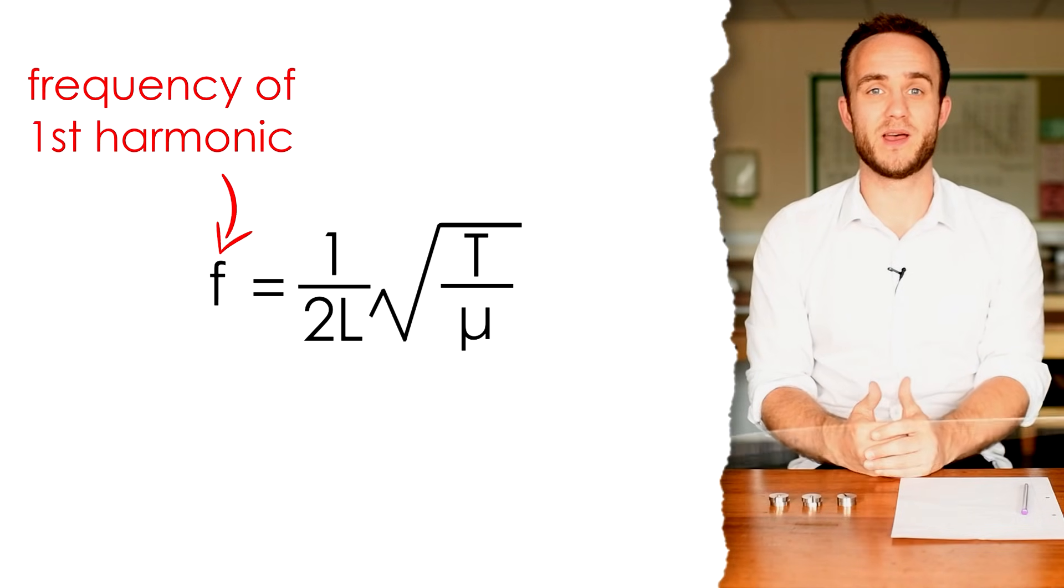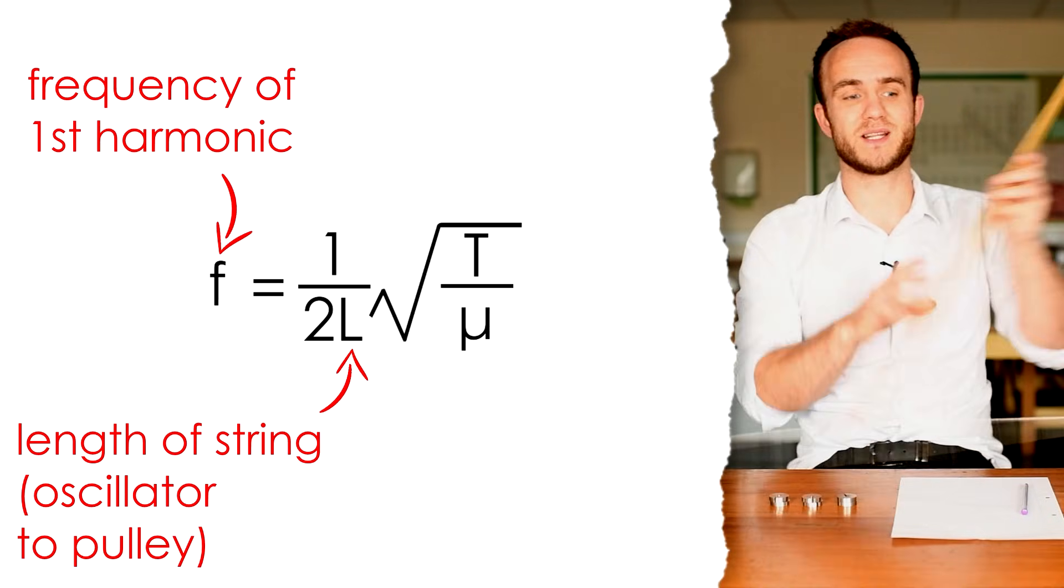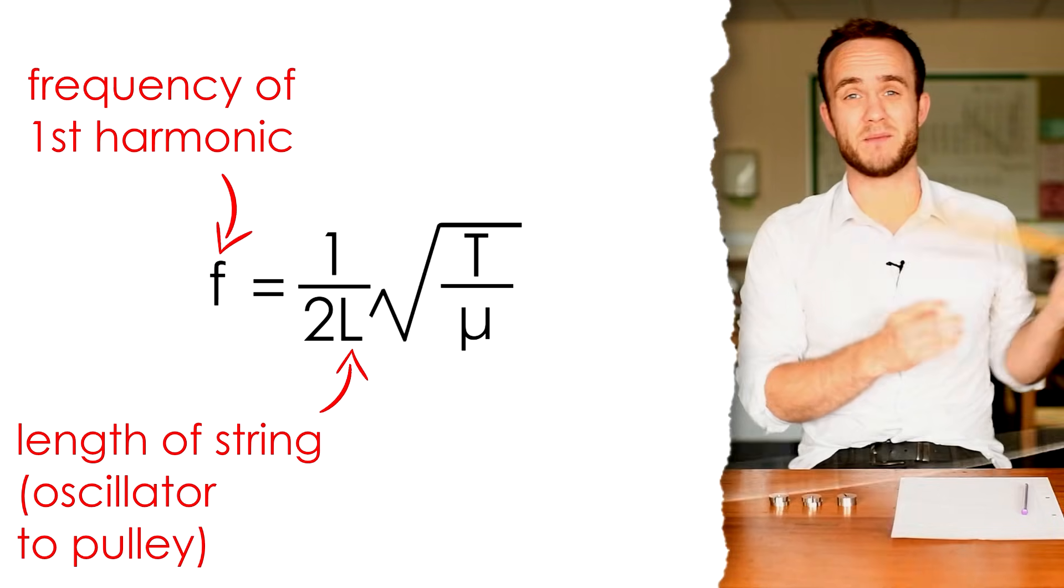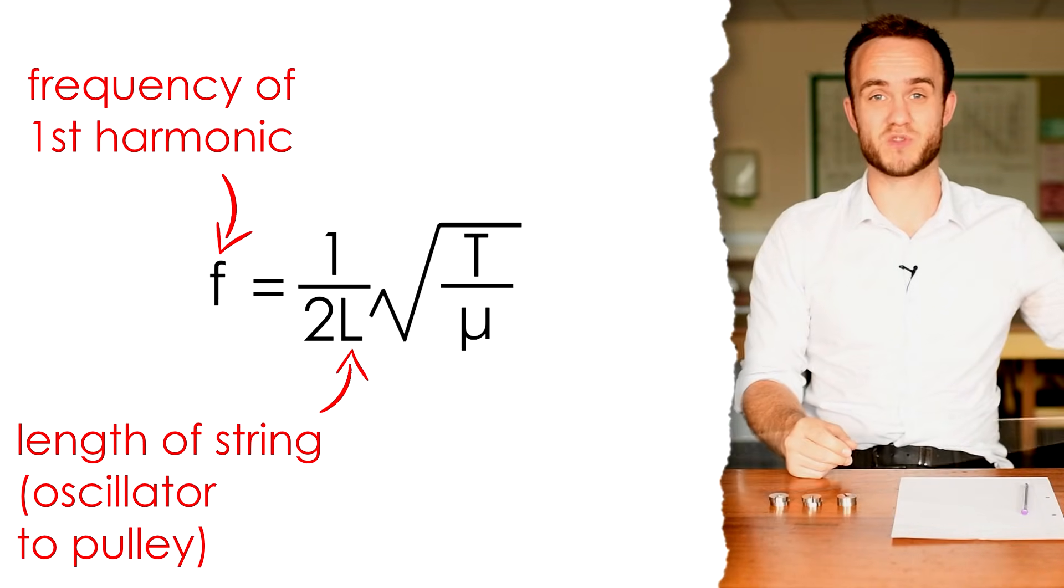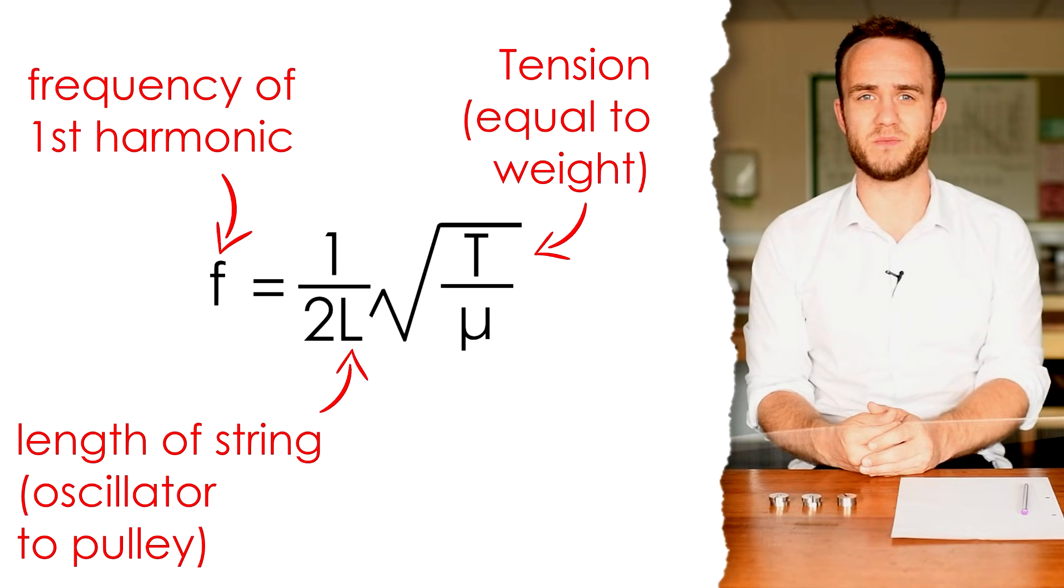F is the frequency of the wave. L is the length of the piece of string, and you are going to want to measure that and make sure that that doesn't change. Mine is exactly a meter, which is a good, nice round number to go with. T is the tension, or the force, on the piece of string.